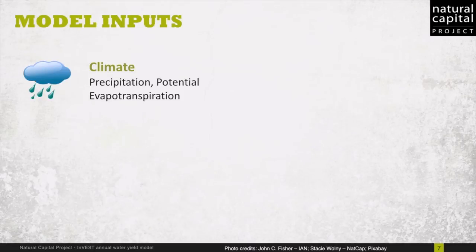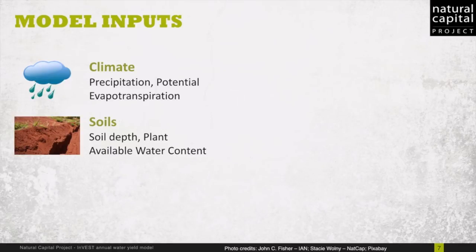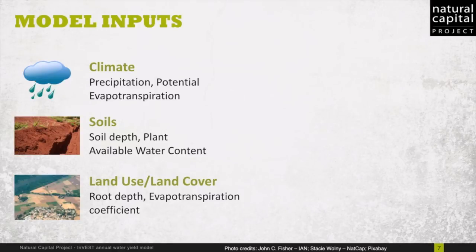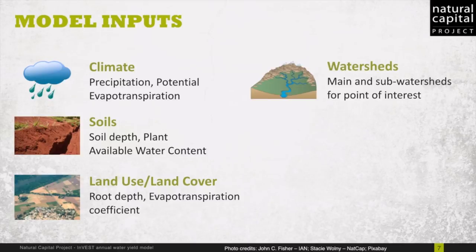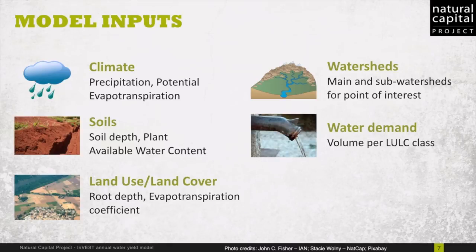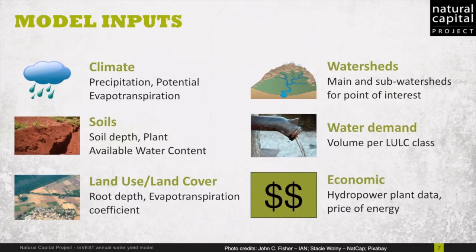The inputs to the water yield model include the climate variables precipitation and potential evapotranspiration, soil properties of soil depth and plant available water content, and land use and land cover with associated values for rooting depth and evapotranspiration. It also requires the boundary for the watershed that drains into the point of interest, as well as the subwatersheds making up the main basin. If you choose to do valuation, the model requires information on water demand specified by land cover type, and economic information including a variety of hydropower plant data and the price of energy.